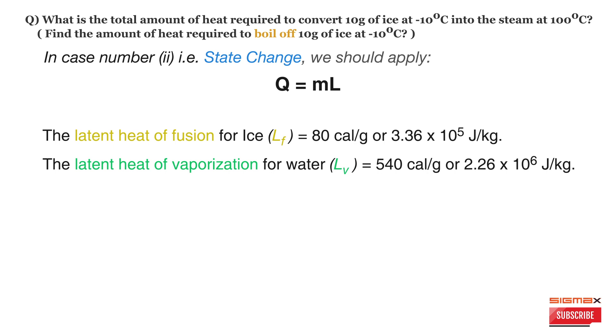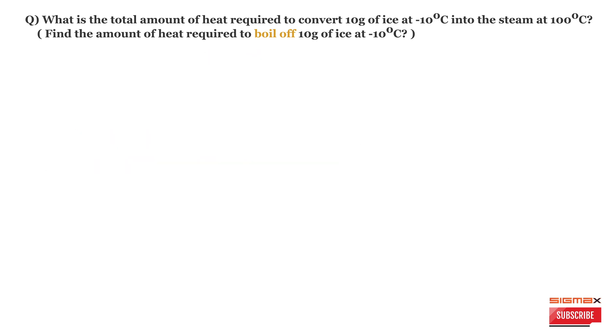Now let's draw a diagram to visualize what processes are going on when 10 grams of ice at minus 10 degrees Celsius is converted into steam at 100 degrees Celsius.